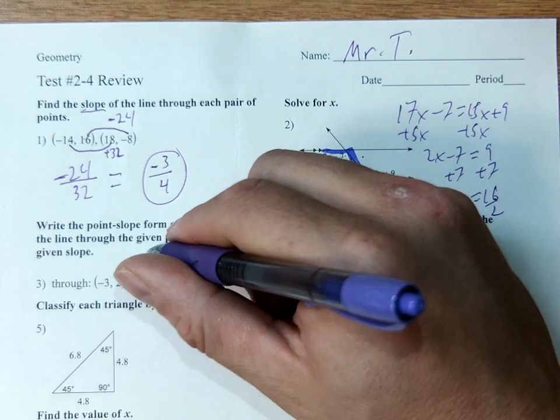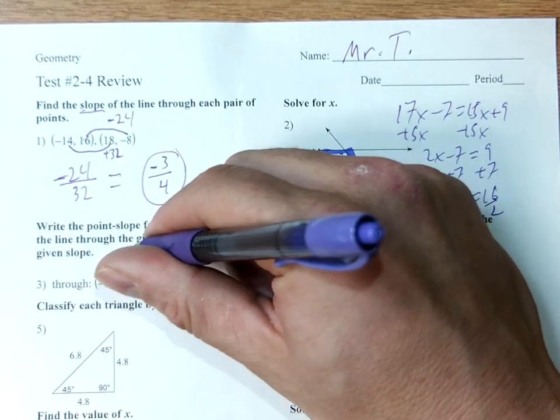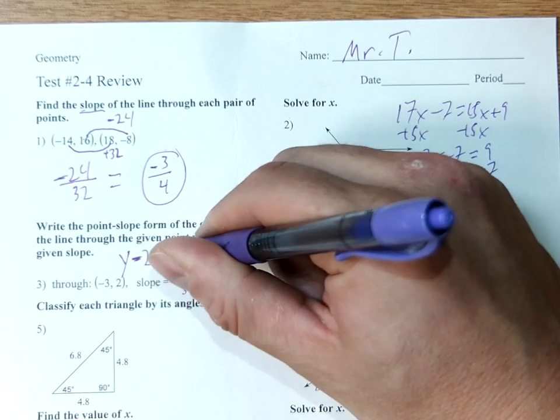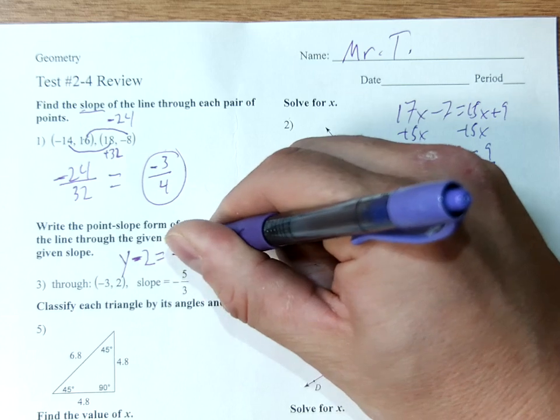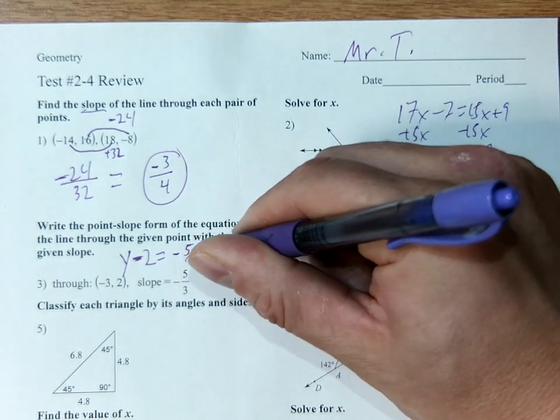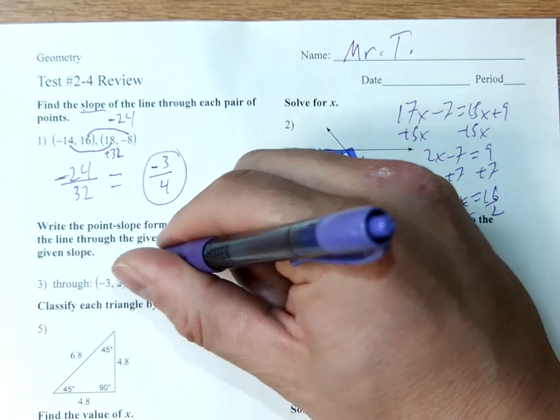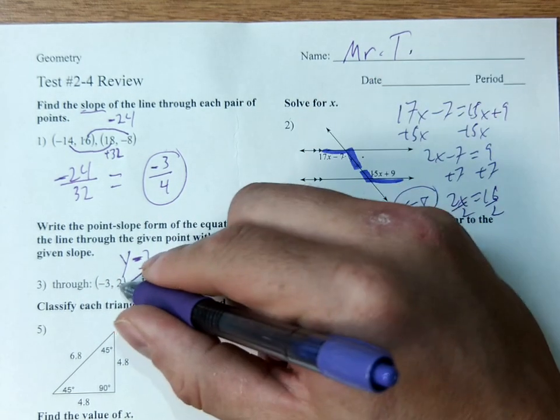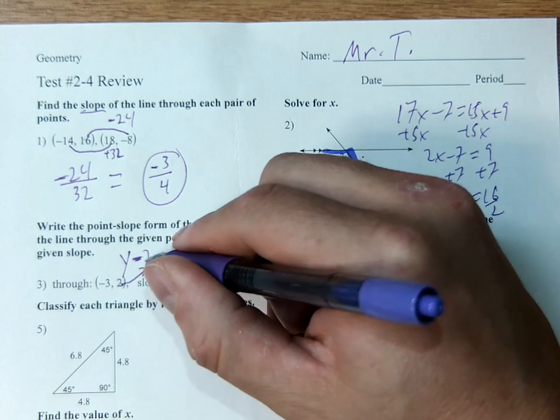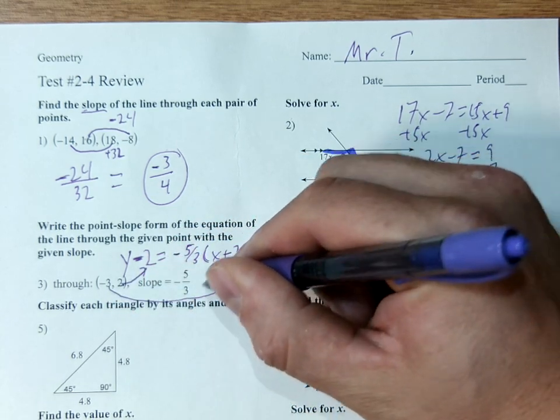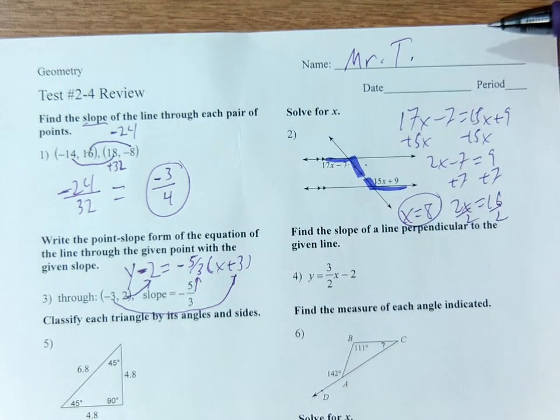Point slope form is on the board still. Put the y next to the y, put the slope in front of the parenthesis with the x next to the x. Remember the signs are opposite. Even though it's positive it's minus 2 here. Even though it's minus 3 it's plus 3. This sign stays the same.